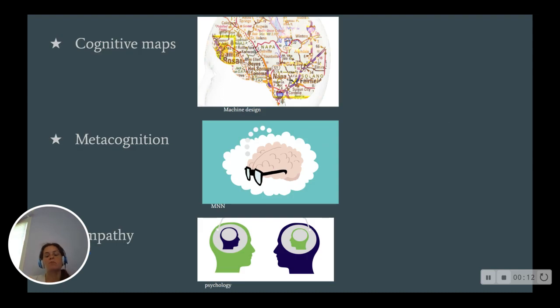Cognitive maps are mental representations of an external area. Metacognition is one's understanding of one's own mental capacity, and empathy is the ability to share and understand another's emotions or feelings.